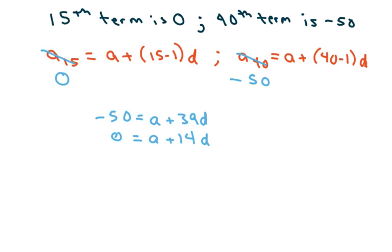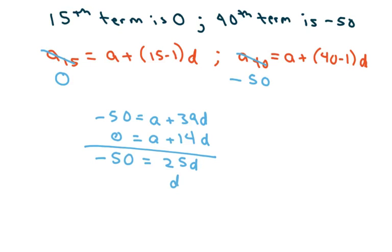Now, to get rid of the a, I'm going to subtract. So I'm going to get negative 50 equals 25d. So my d is negative 2.